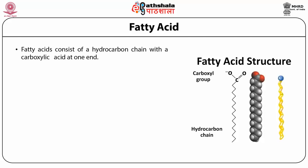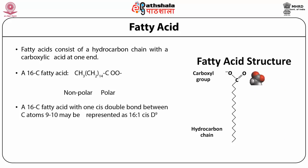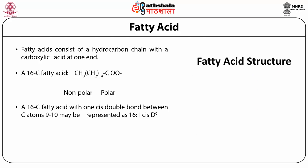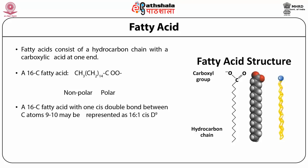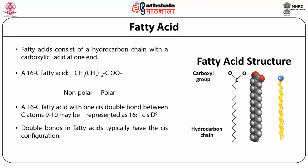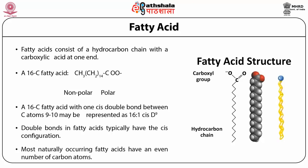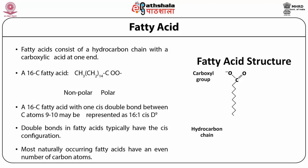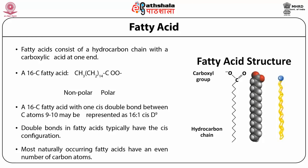Fatty acids consist of a hydrocarbon chain with a carboxylic acid at one end. A 16-carbon fatty acid has both non-polar and polar groups. A 16-carbon fatty acid with one cis double bond between carbon atoms 9 and 10 may be represented as 16:1 cis Δ9. The double bond in fatty acids typically has the cis configuration. Most naturally occurring fatty acids have an even number of carbon atoms because they are made up of two-carbon moieties.